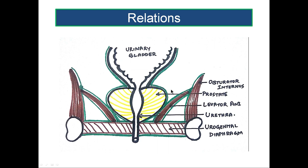When we look at the inferolateral surface of the prostate, it is related to the levator ani muscle. It is covered by fascia — the parietal layer of pelvic fascia covering levator ani — which will separate the bladder from a space lateral to it. This space is the anterior recess of the ischiorectal fossa.